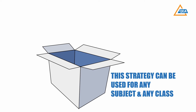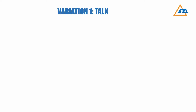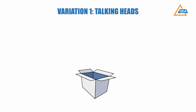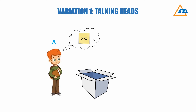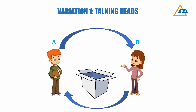This strategy has two variations. Variation one is named 'Talking Heads.' This is played in pairs — Partner A thinks of the term and keeps it in the box, and Partner B has to guess. After one round, the roles are reversed. The terms for Partner A and B can be provided by the teacher.